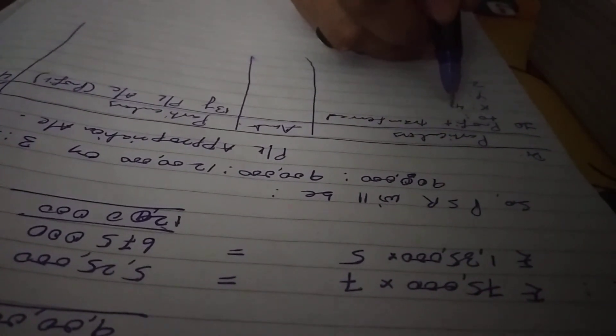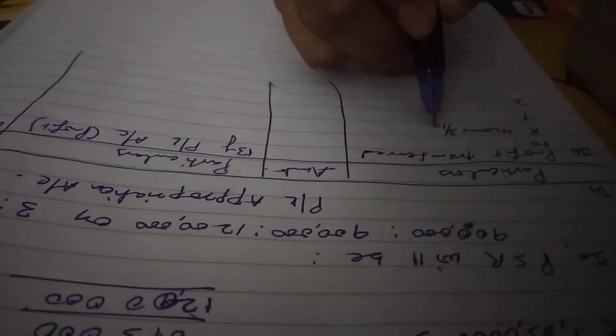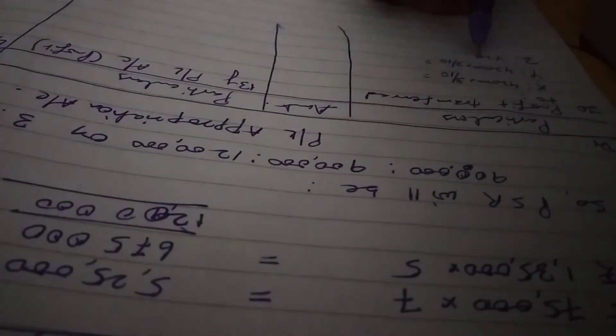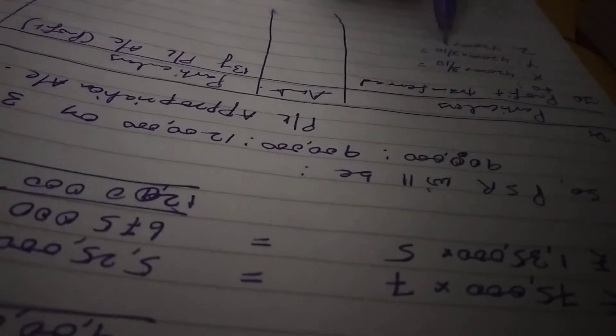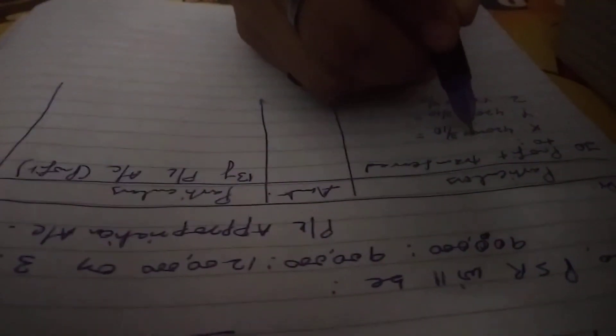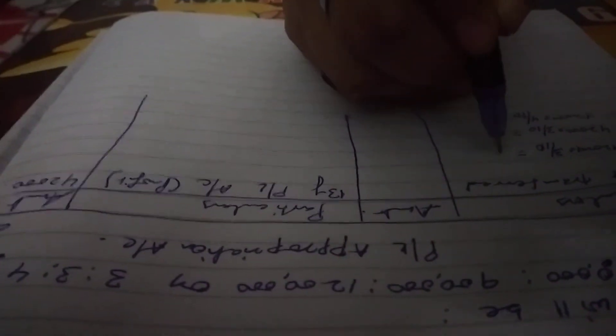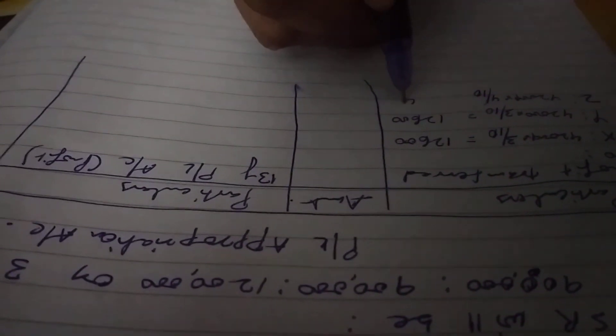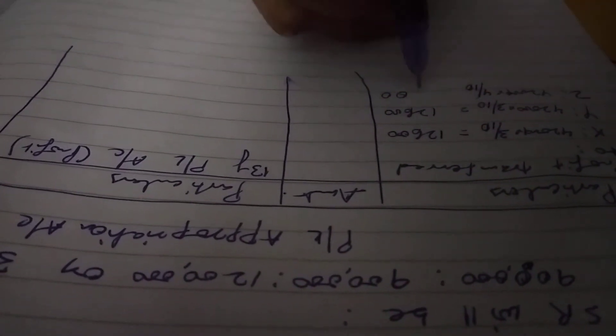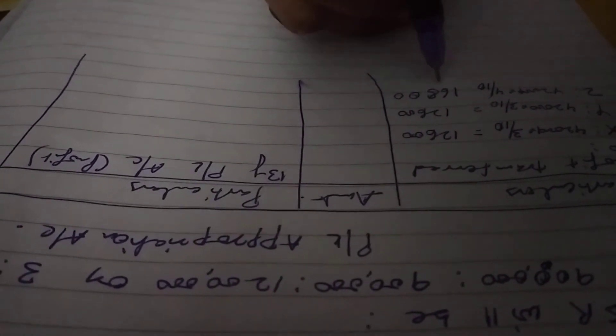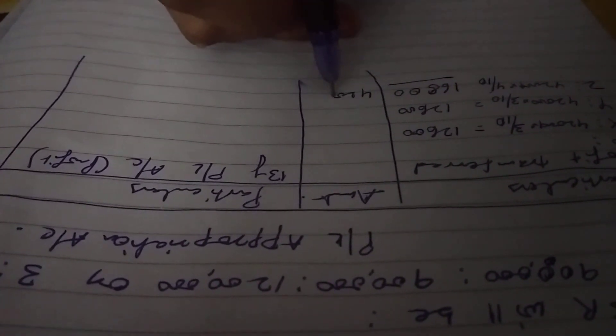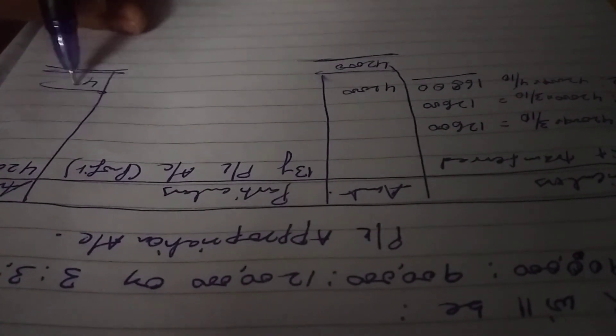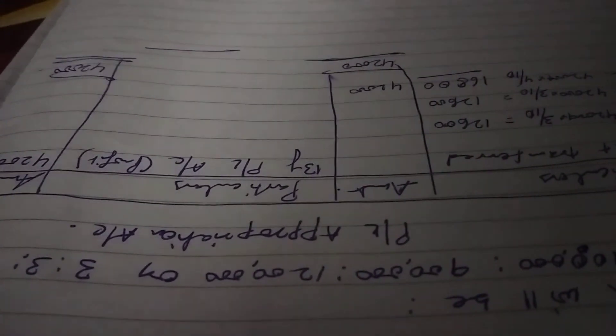42,000 into 3 by 10, 42,000 into 3 by 10, and 42,000 into 4 by 10. So this will be 12,600, here also 12,600, and here 16,800. Total will be 42,000. Both sides will be equal, 42,000 and here 42,000.